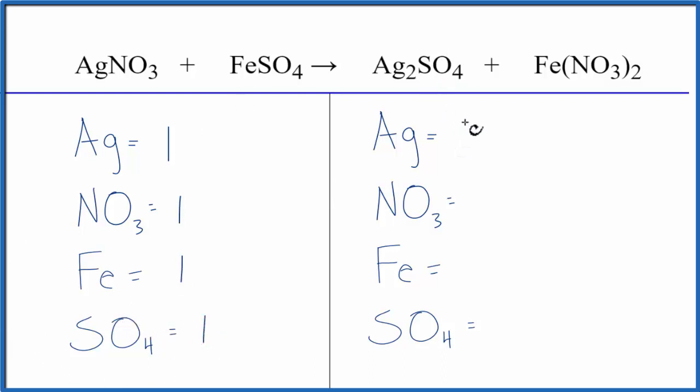On the product side, two silvers, nitrates, we have two nitrates, we have one iron, and then we have one sulfate.